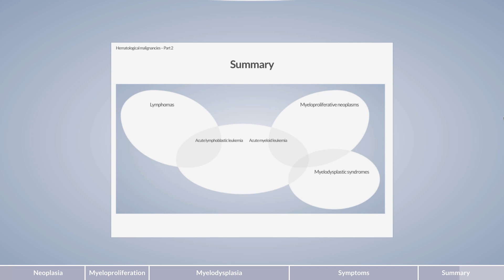Acute lymphoblastic leukemias and acute myeloid leukemias are often grouped together under the term acute leukemias. The chronic leukemias do not have their own group; rather, they hold a special position. Chronic lymphocytic leukemia is assigned to the lymphomas, and chronic myeloid leukemia belongs to the myeloproliferative neoplasms.